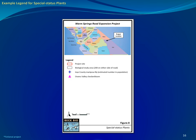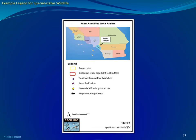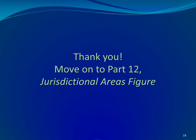Here's an example legend for a special status plants figure. It has everything that I just described. The legend shows Inyo County Mariposa Lily populations as blue four-point stars and individual sightings of Owens Valley Checkerbloom as pink triangles. Here is an example legend for a special status wildlife figure. Individual observations of southwestern Willow Flycatchers are purple diamonds, pink stars for LBVs, yellow circles for gnatcatchers, and rat icons for SKRs. If you have any questions, please move on to Part 12 which deals with the Jurisdictional Areas figure.